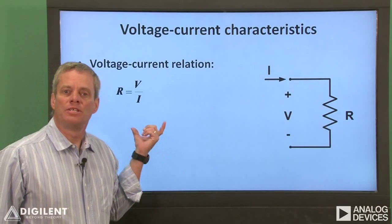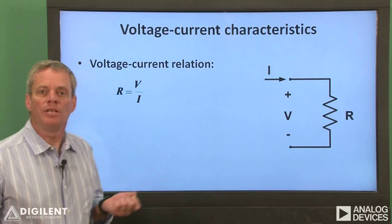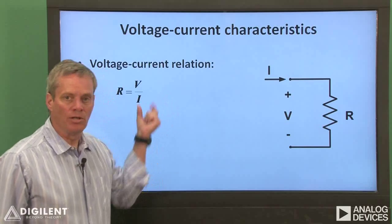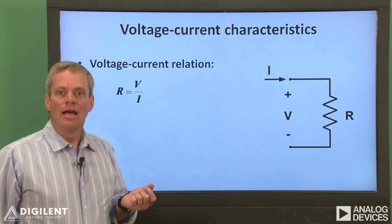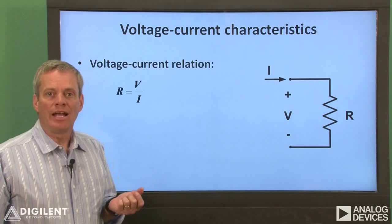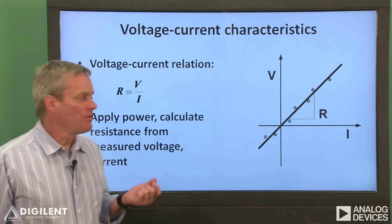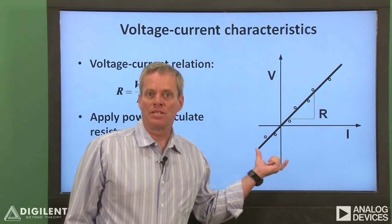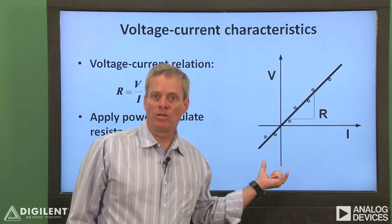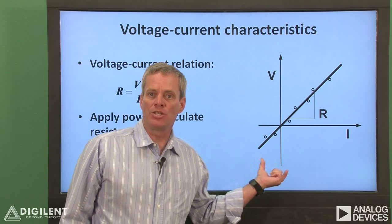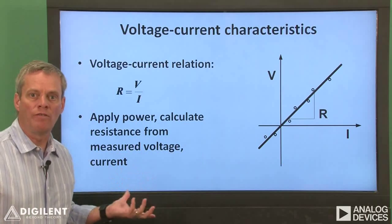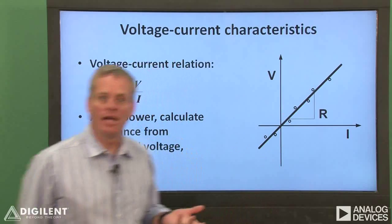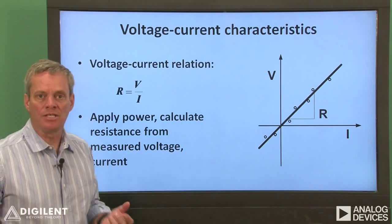Resistors are characterized by their resistance, which is simply a relationship between the voltage and current at their terminals. As we pointed out in the Chapter 1 lab videos, we can plot voltage-current characteristics by applying power to the circuit, measuring the voltage and current, and plotting one versus the other. The slope of the resulting line gives the resistance.